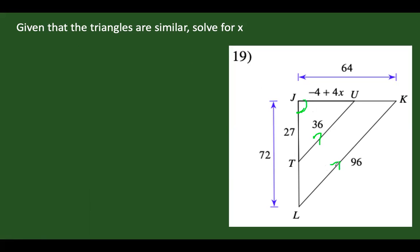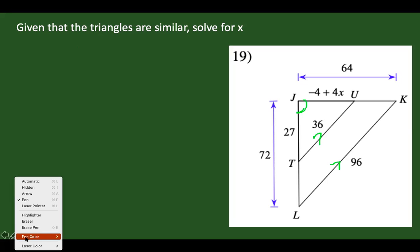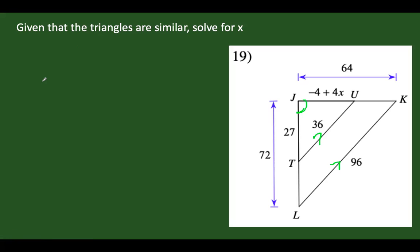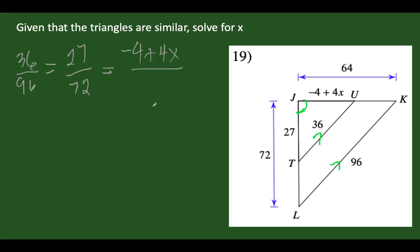That's additional information but doesn't directly help in solving. We have three sides given — the partial sides and the whole sides. We can use SSS to establish proportionality. Let's identify the corresponding parts. These two sides are corresponding, so: 36 over 96 equals 27 over 72 equals (negative 4 plus 4x) over 64.